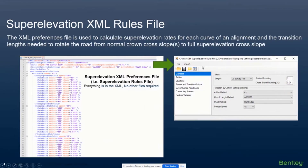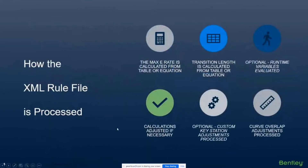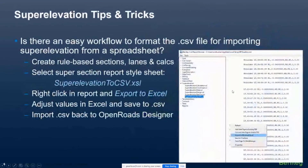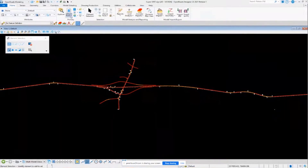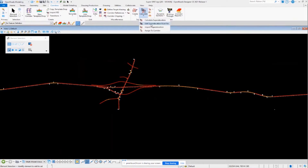The rules file is basically used to calculate your super elevation rates for each curve, transition lengths, and all rotations related to super elevation. It's important to understand how it works — many agencies will already have it set up and ready to go, so generally you don't need to do much beyond minor adjustments in the dialog box. The file first looks at the max e-rate from the table or equation, calculates the transition length from a table or equation, makes any necessary adjustments, and applies those to your super elevation sections and lanes.